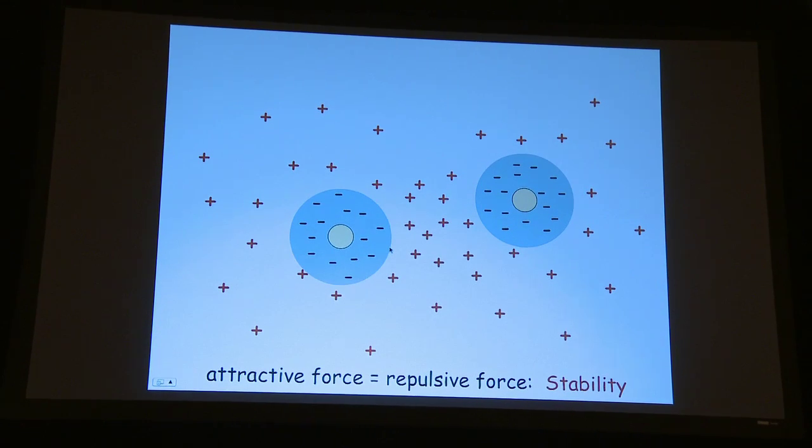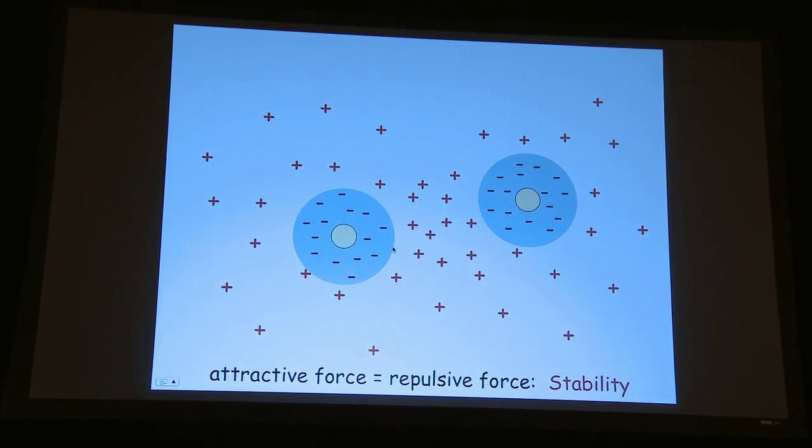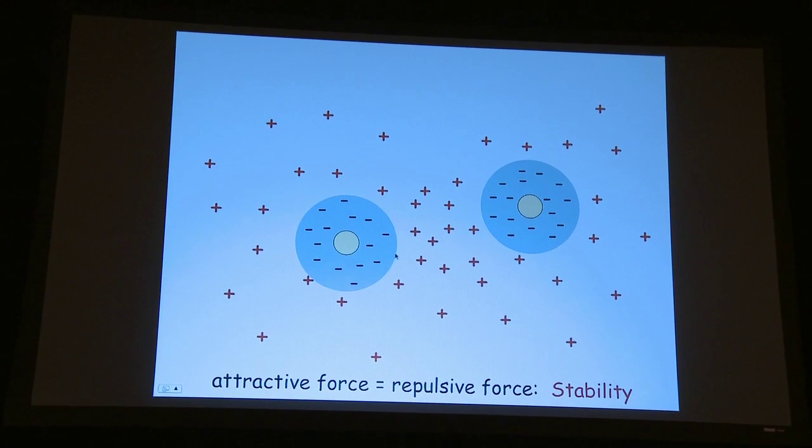And until recently, it wasn't clear where these charges came from. And I provided an understanding of where those positive charges come from. So they come together and they reach a point of stability when the attractive force of those protons in the middle is equal to the repulsive force of negative repelling negative. And then you get stability.